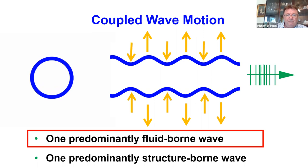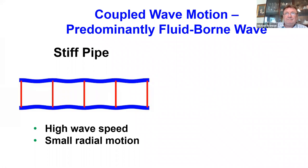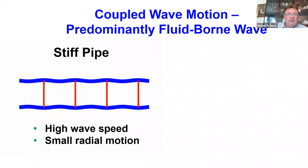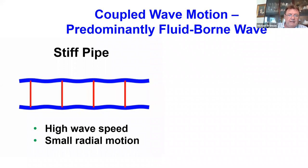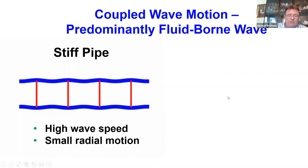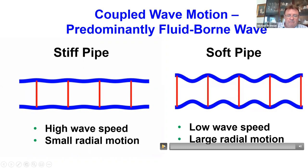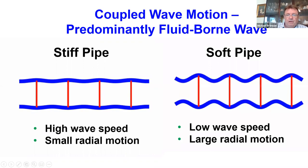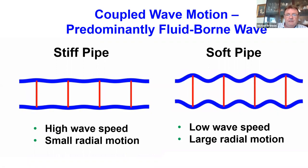The one of particular interest for leak detection is the predominantly fluid-borne wave. If you have a stiff pipe, like a metallic pipe, the coupling is much less, giving a fairly high wave speed and small radial motion. With a soft pipe, the coupling slows the wave down significantly, resulting in a very low wave speed and very large radial motion.